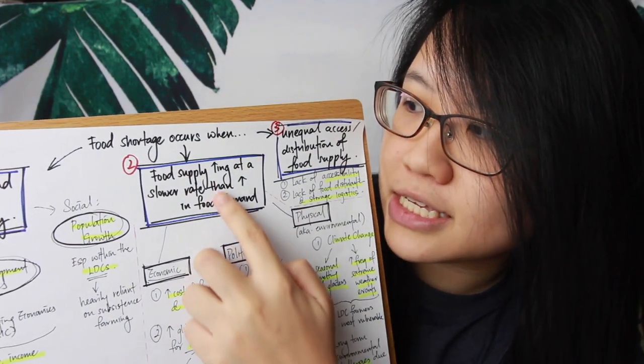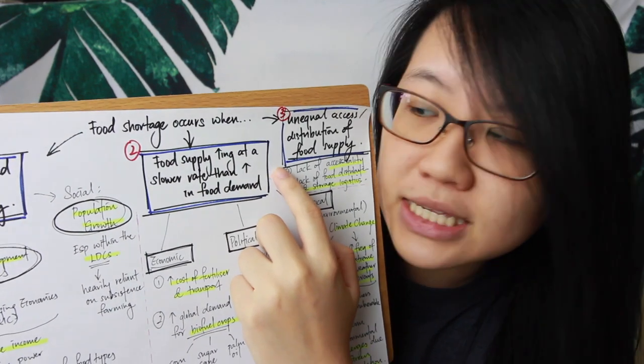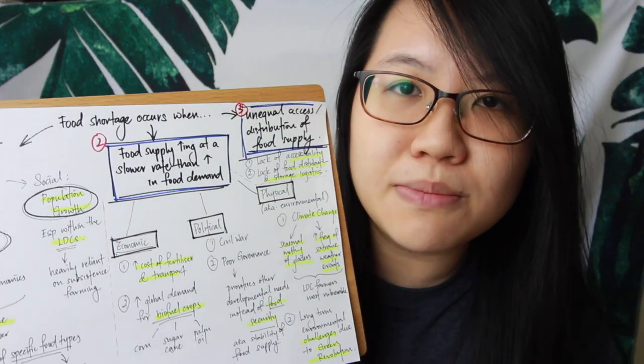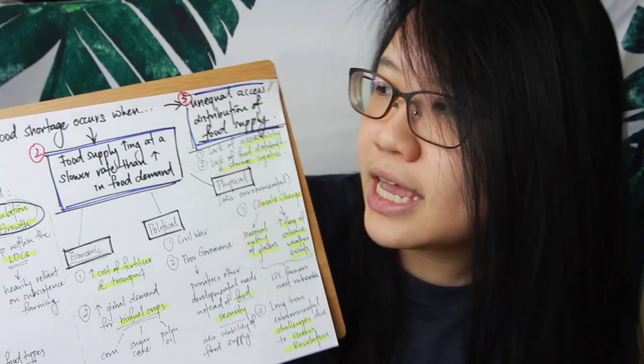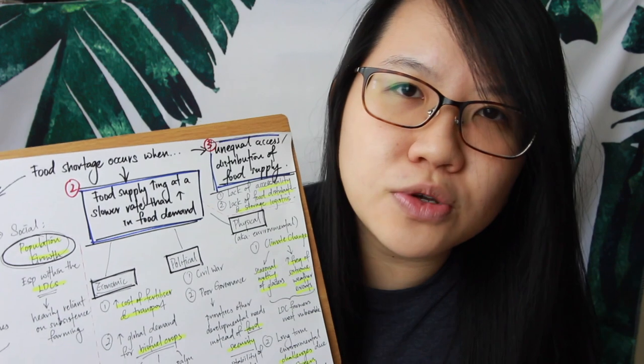When I ask students about food shortage, the common response is that there's more demand than supply and because there's no equilibrium, it results in global food shortage. Beyond that, it's important to recognize that food supply is increasing at a slower rate than demand, and that there is unequal access and distribution of food supply, especially to rural, remote LDC communities.